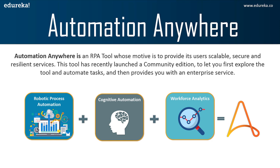Automation Anywhere is an RPA tool whose motive is to provide its users with scalable, secure, and resilient services. This tool has recently launched a community edition to let you explore and automate tasks, and once you have hands-on experience, you can go forward with the enterprise edition. To summarize, Automation Anywhere is the combination of robotic process automation plus cognitive automation plus workforce analytics. Since Edureka is an official training partner of Automation Anywhere, you can go forward with their certification to get access to the enterprise edition.